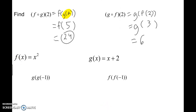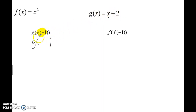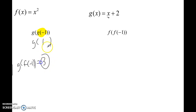We're allowed to change F and G from problem to problem — F, G, and H are the most popular names for functions. This next one is a bit unusual because we're doing G of G of negative 1. The inside function is what you evaluate first, so figure out G of negative 1. Everywhere there's an X, plug in negative 1: negative 1 plus 2 is 1. Now go back to the same G function and plug in 1: 1 plus 2 is 3. So G of G of negative 1 equals 3.